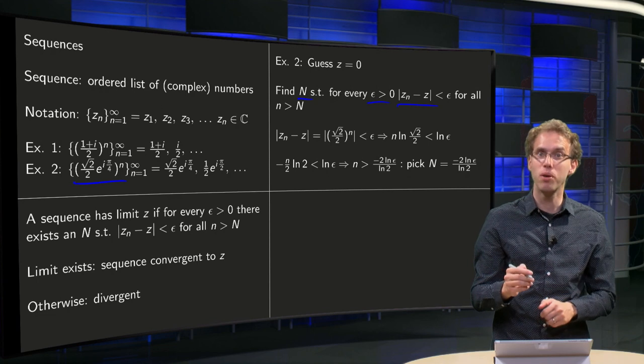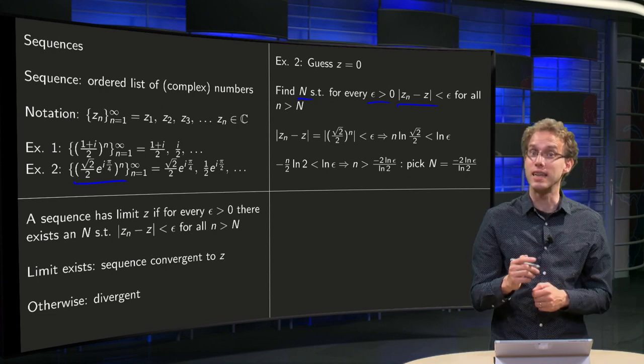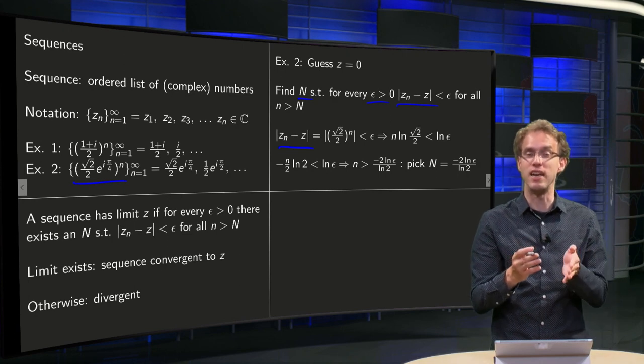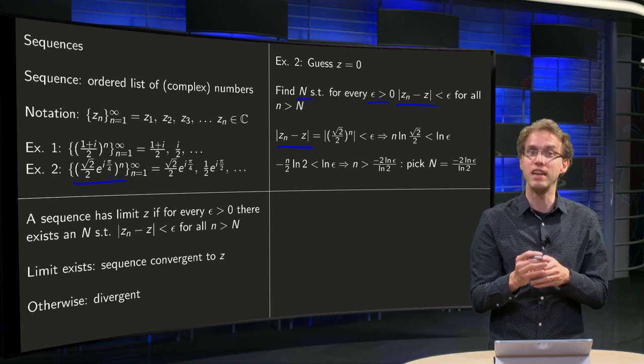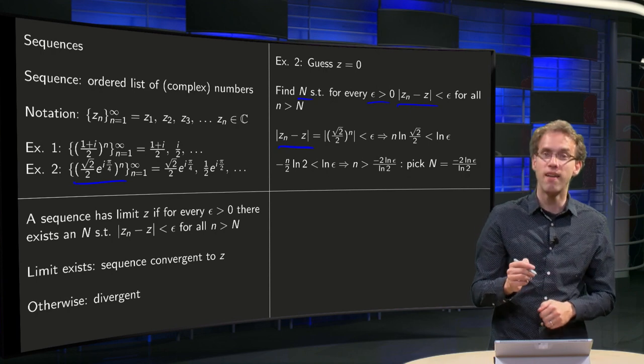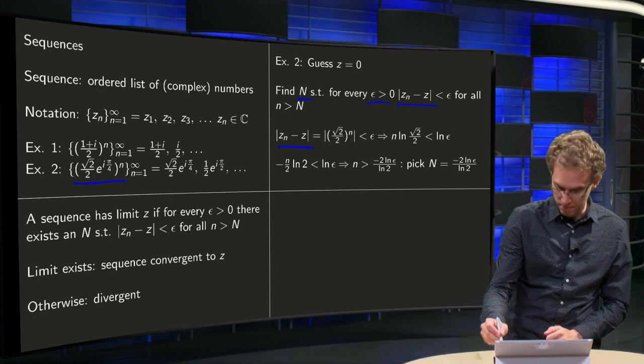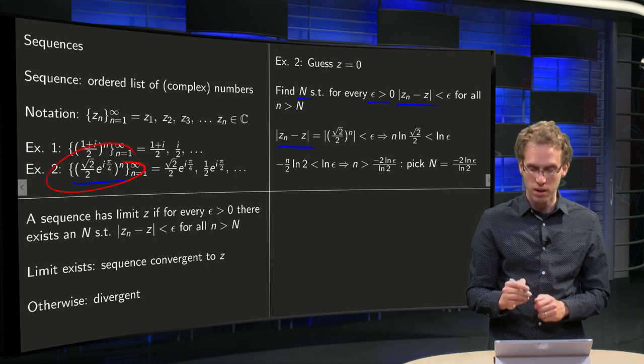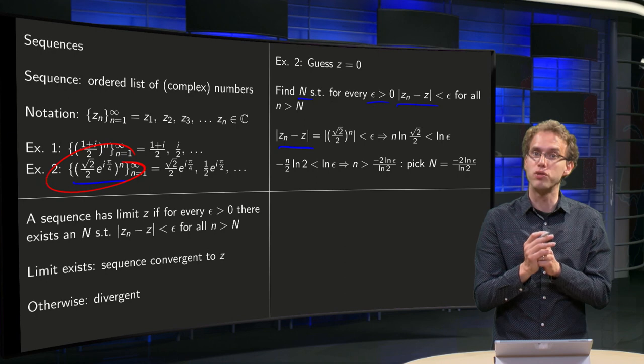What is this norm? How are we going to find this capital N? Well the norm of z_n minus z, well z equals 0, that's what we get, so the norm of z_n is just the norm of z_n. And the norm of z_n is the norm of this z_n over here, which is (√2/2)^n.